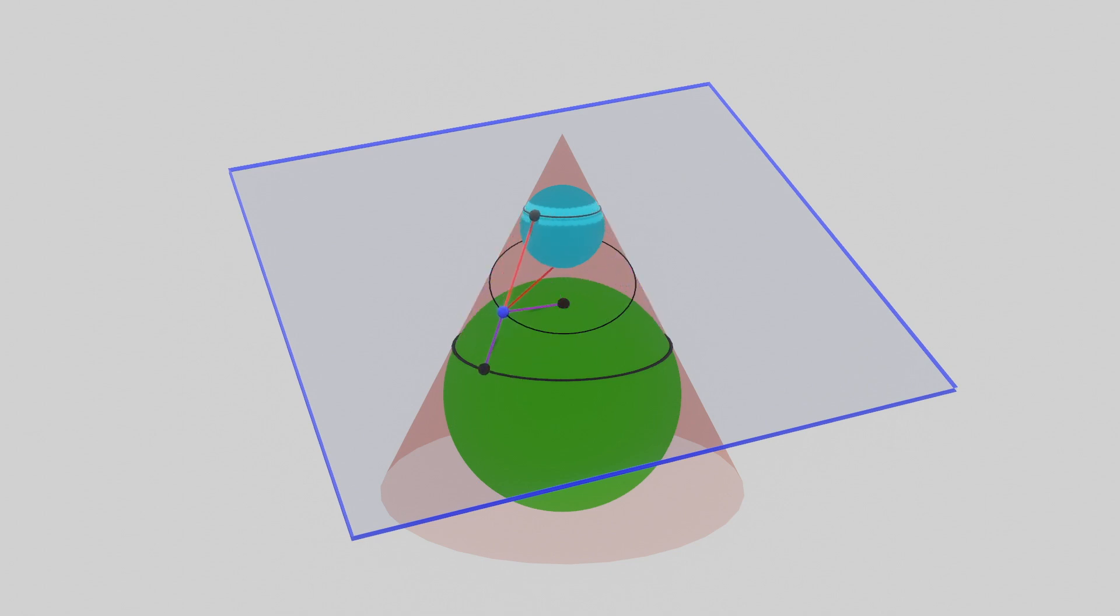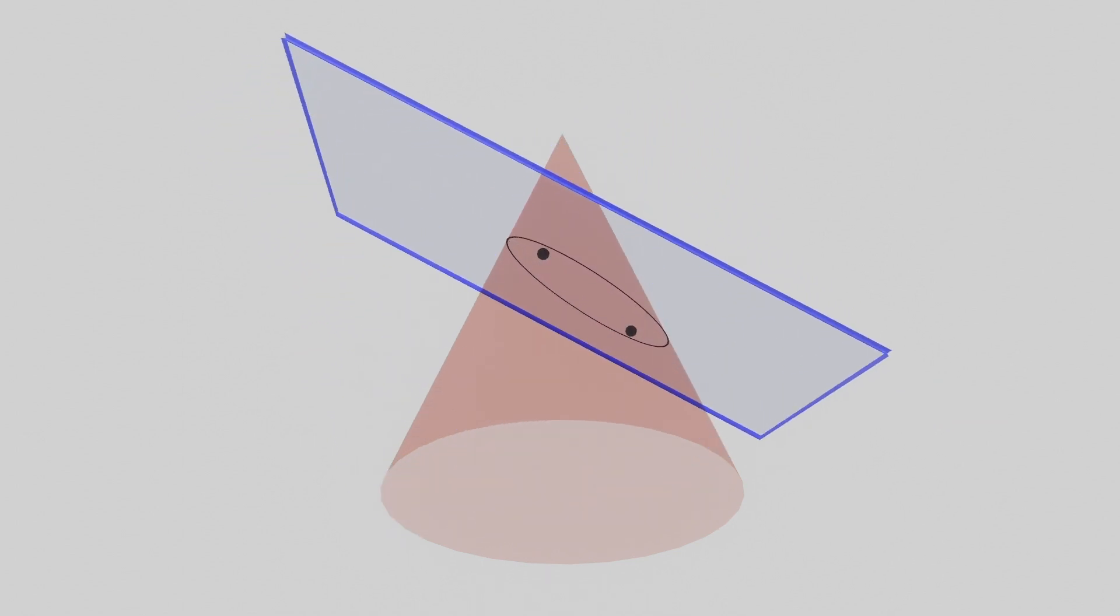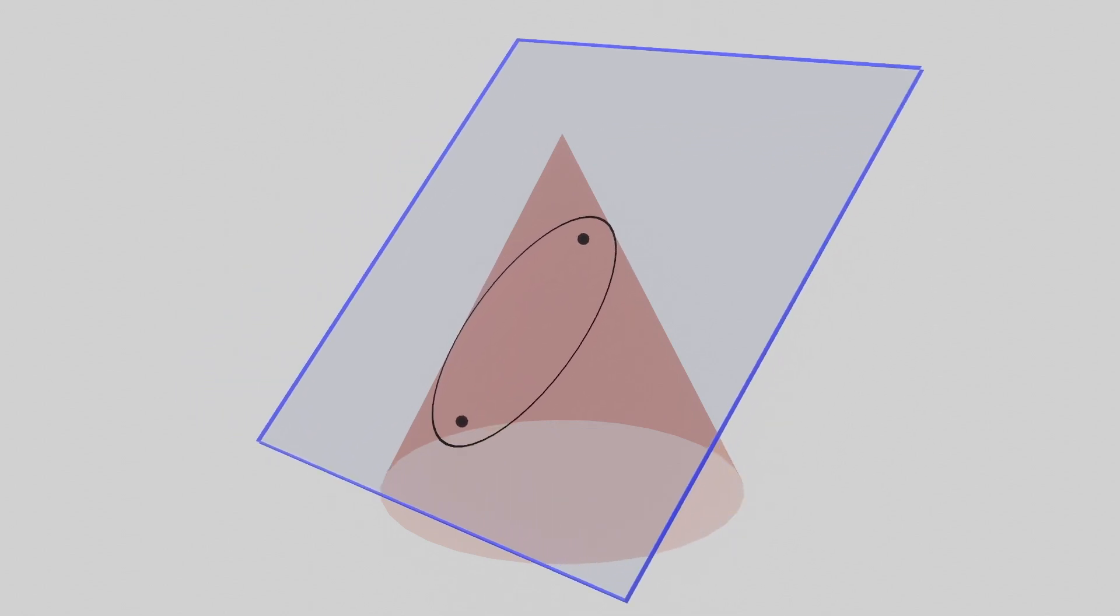So, by our definition earlier, the shape we have must be an ellipse and the two points at which the Dandelin spheres are tangent to the plane are the foci of the ellipse. That's it! We've concluded the proof.